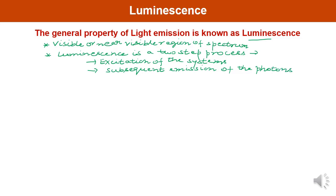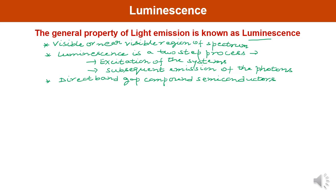Several semiconductors exhibit the property of luminescence, especially the direct bandgap compound semiconductors. You must remember some examples of direct bandgap compound semiconductors like gallium arsenide.